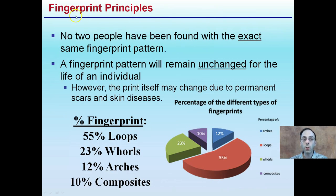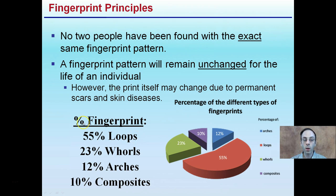Starting with some basics of fingerprints: no two people have been found with the exact same fingerprint pattern, and the fingerprint pattern will remain unchanged for the life of the individual. However, the print itself may change due to permanent scars, skin diseases, or damage. Looking at a pie graph: 55% of people typically have loops, 23% whorls, 12% arches, and 10% composites. We're going to investigate each one of these in more detail.